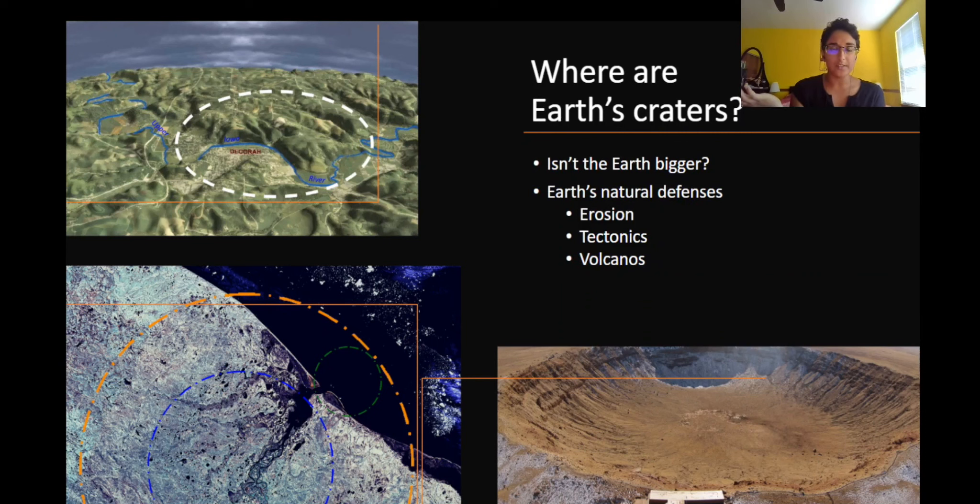But what about the Earth's craters? Doesn't it make more sense that since the Earth is bigger, it should have even more craters than the moon? Well, the Earth does have about 150 craters that we can see. Here on the top left of the slide, you can see the Manson crater in Iowa. Right below it is the Kara crater in Russia, and finally at the bottom right is the famous meteor crater in Arizona.